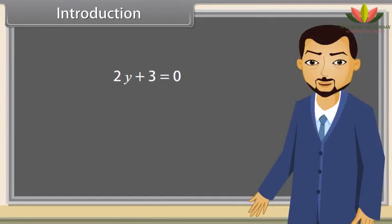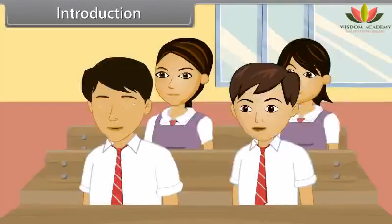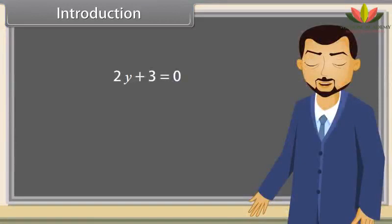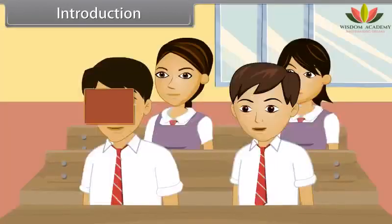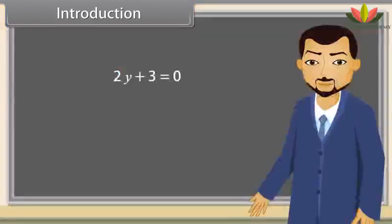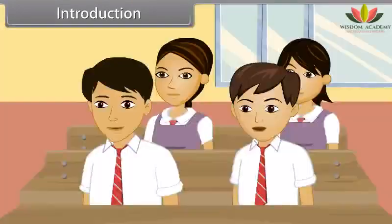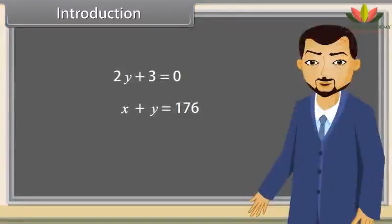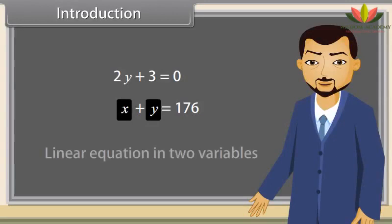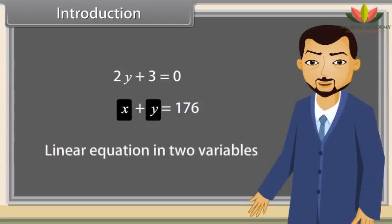Students, can you tell which equation is this? This is a linear equation, sir. Yes, this is a linear equation. Can you solve this equation? Yes, this is so easy. Correct. Now tell me which equation is this? This is also a linear equation. Yes, this is also a linear equation, but it has two variables, x and y. So it is called a linear equation in two variables.